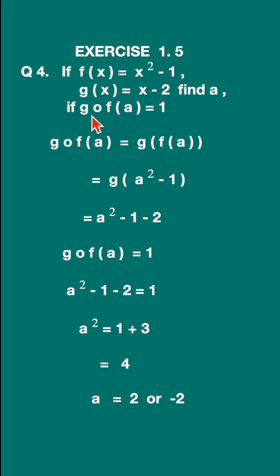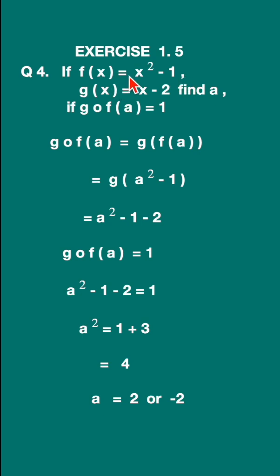Let's find out this: g(f(a)) is equal to g of f(a). So let's find out what f(a) is. Here, f(x) is equal to x squared minus 1, so f(a) — replace x with a — it will be a squared minus 1. So f(a) is equal to a squared minus 1.